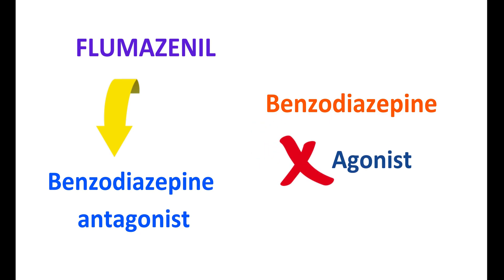Flumazenil is one of the medications classified as a Benzodiazepine receptor antagonist. Even though it has structural similarity with Benzodiazepines, Flumazenil is not acting like an agonist. Structurally, it is an imidazobenzodiazepine and it acts as an antagonist on Benzodiazepine receptors.